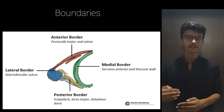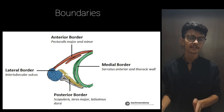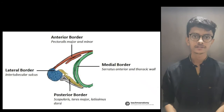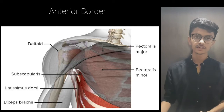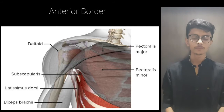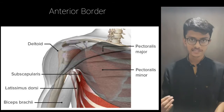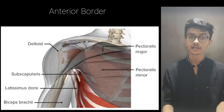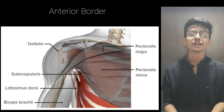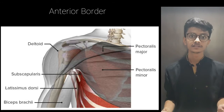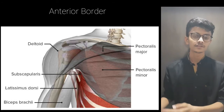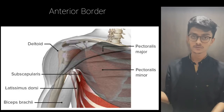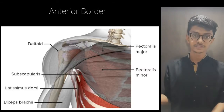posterior, medial, and lateral. The anterior border is formed by the pectoralis major, with underlying structures such as pectoralis minor and subclavius also present on the anterior surface, as shown in this picture.